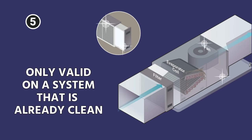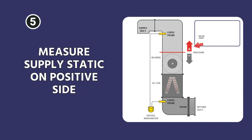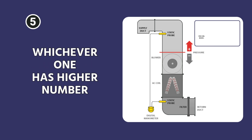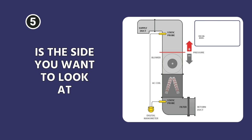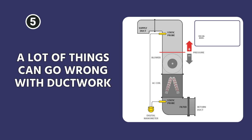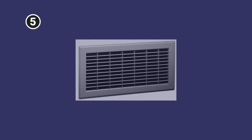This is only valid on a system that is already clean and once you already know the system has been set up for proper settings. Measure your total external static — measure your supply static on the positive side and your return static on the negative side. Whichever one has the higher number is the side that you want to look at. Look for things like kinked ductwork, ductwork that's improperly strapped or undersized, or even someone pushing a couch up against the return or shutting off a bunch of registers in the house.